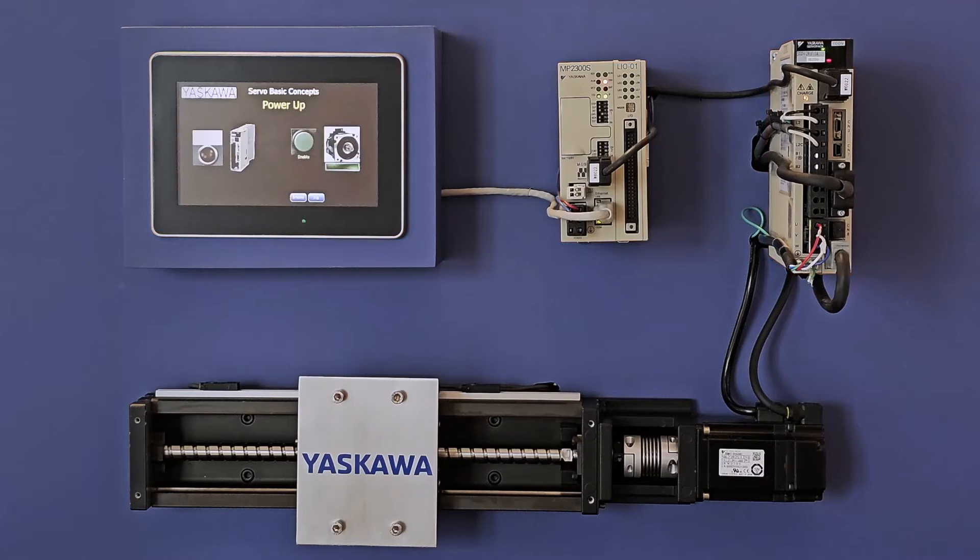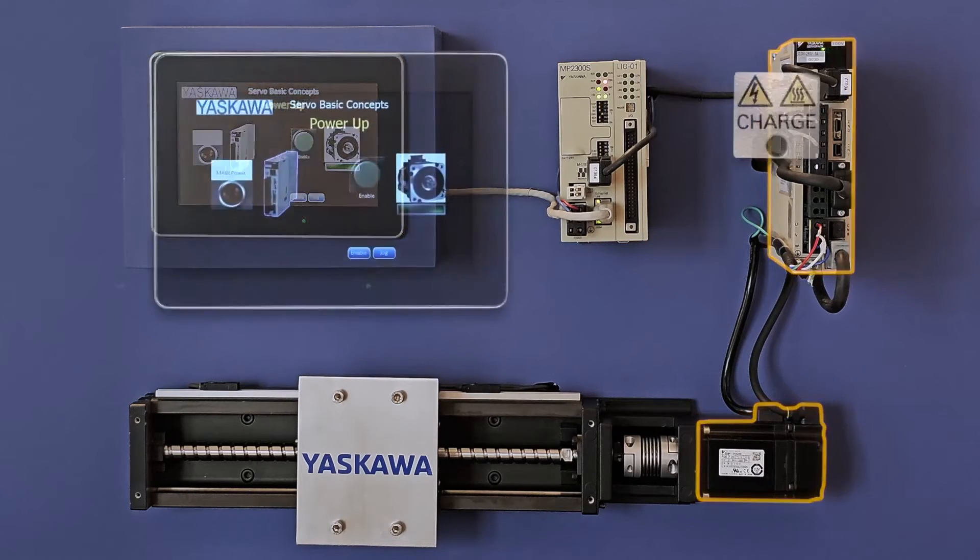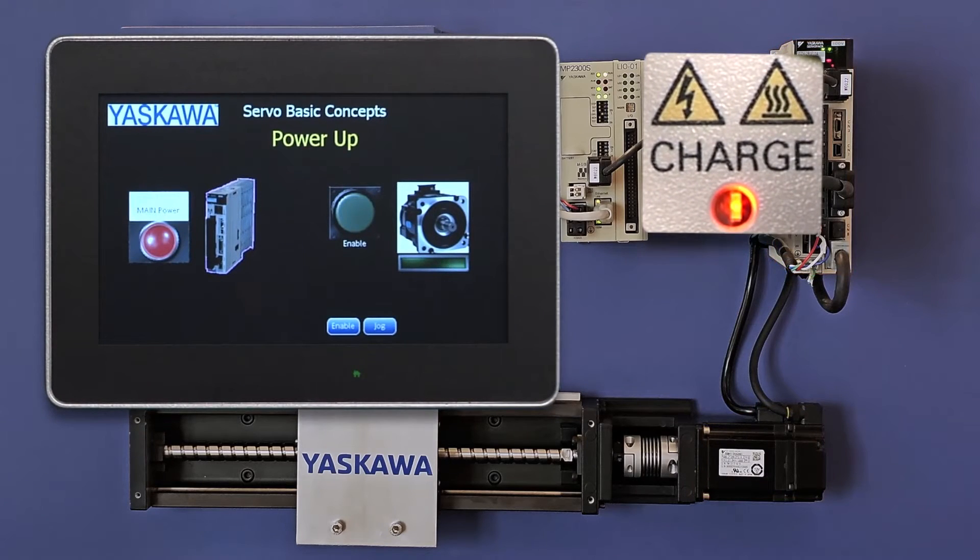The second stage is to apply the high voltage and high current power source that the amplifier will use to drive the motor. We refer to this as main power. The main power input allows flexibility in wiring to the servo amplifier.